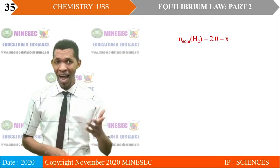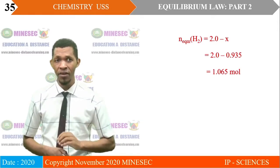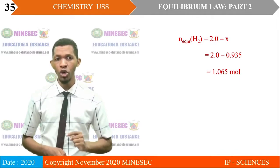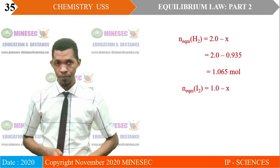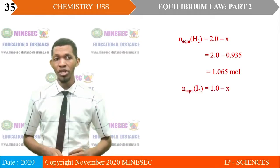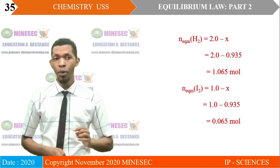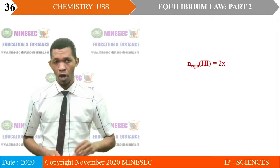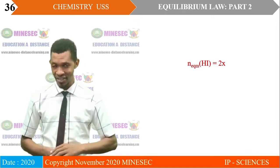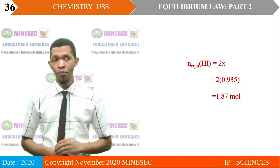Moles of H₂ at equilibrium = 2.0 − 0.935 = 1.065 moles. Moles of I₂ at equilibrium = 1.0 − 0.935 = 0.065 moles. Moles of HI at equilibrium = 2 × 0.935 = 1.87 moles.